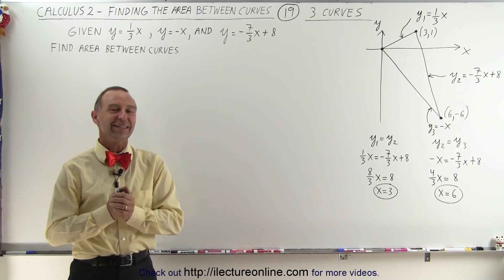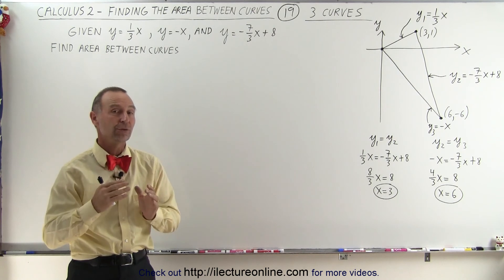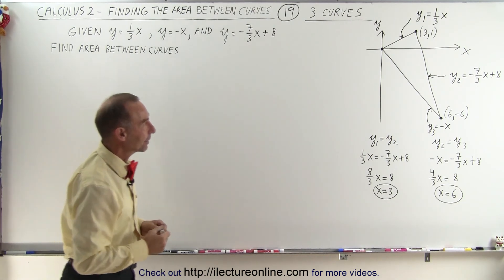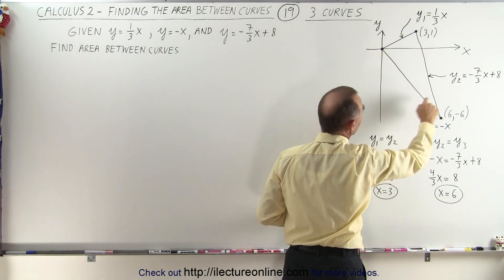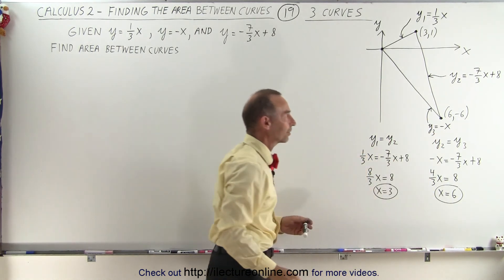Welcome to our lecture online. Now let's take a look at an example where we have three different curves bounding a particular area and we're trying to find the area here that's bounded by the curves y1 equals 1/3 x, y2 equals -7/3 x plus 8, and y3 equals -x.